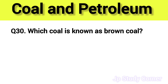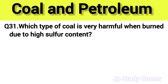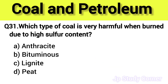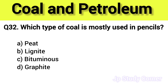Question number thirty: which coal is known as brown coal? The right answer is option C — lignite. Question number thirty-one: which type of coal is very harmful when burned due to high sulfur content? The right answer is option C — lignite. Question number thirty-two: which type of coal is mostly used in pencils? The right answer is option D — graphite.